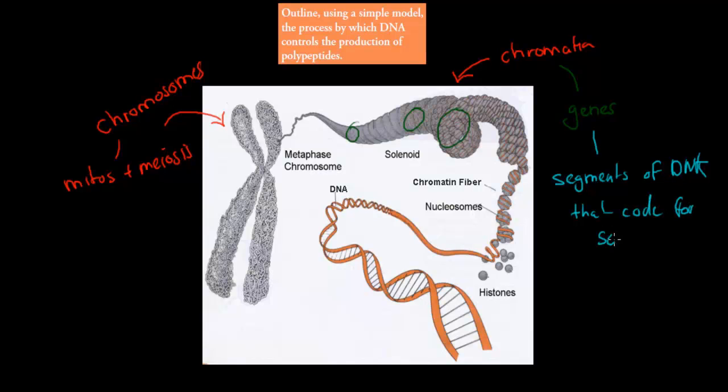So segments of DNA that code for something. And what do they code for? Well, they code for polypeptides. So they help make polypeptides. If you remember from the last video, we said that polypeptides help us make proteins.